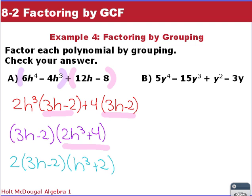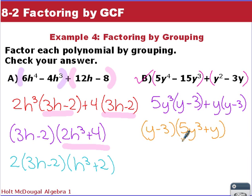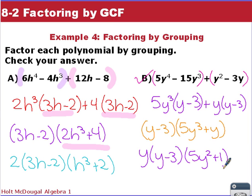For example B, we have 5y⁴ - 15y³ + y² - 3y. Group the first two and last two terms. From the first group, factor out 5y³, leaving (y - 3). From the second group, factor out y, also leaving (y - 3). Factor out (y - 3): (y - 3)(5y³ + y). That expression still has a common factor of y, so factor it out again: y(y - 3)(5y² + 1). Now nothing has common factors and we're done.